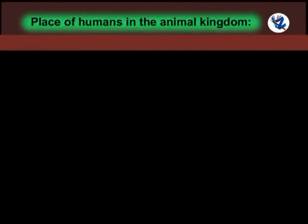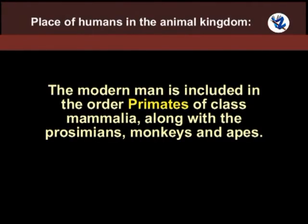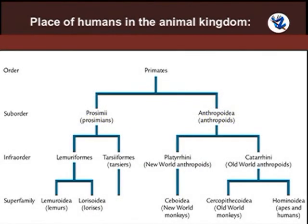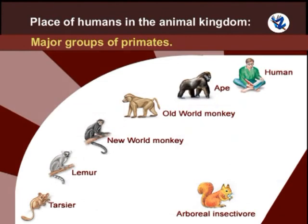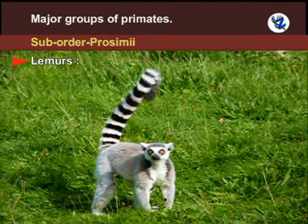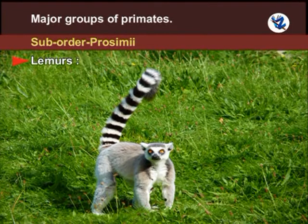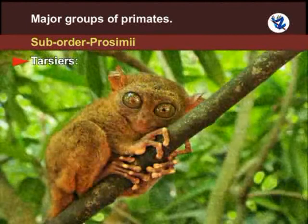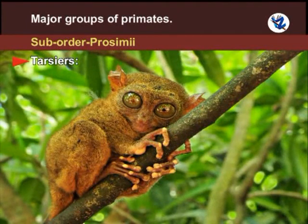Place of humans in the animal kingdom: The modern man is included in the modern primates of class Mammalia along with prosimians, monkeys and apes. The order Primates is divided into two sub-orders: Prosimii and Anthropoidea. Sub-order Prosimii includes lemurs, which are small arboreal animals mainly found in Madagascar, and tarsiers, which are arboreal, nocturnal insectivorous primates found on islands of the East Indies.